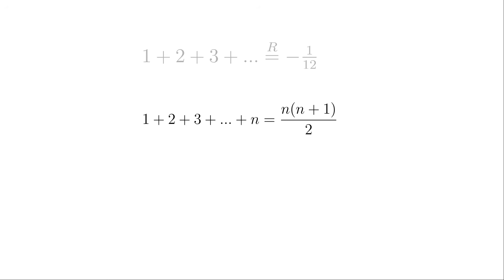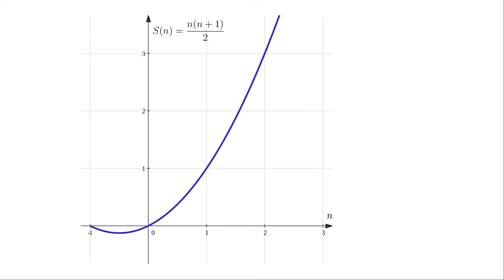Let's start with the sum for 1 plus 2 plus 3 up to n. There's a general formula to evaluate this: n times n plus 1 divided by 2. I'll call this sum function S of n. Let's plot this function. Here's the first strange thing.